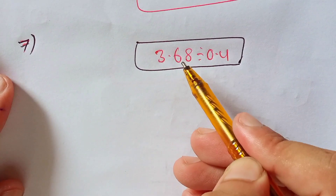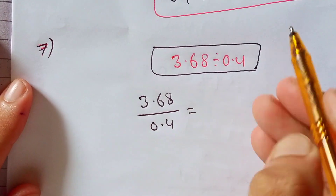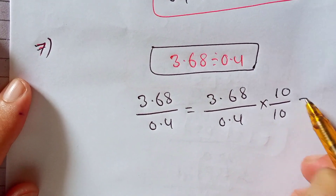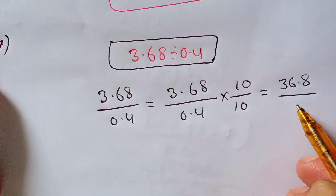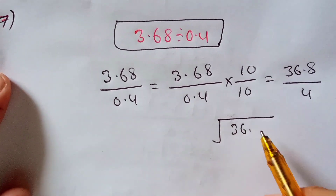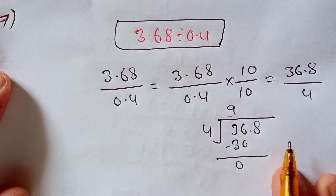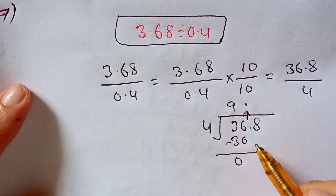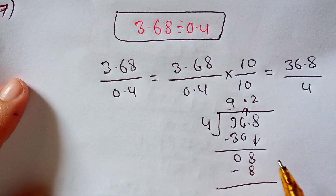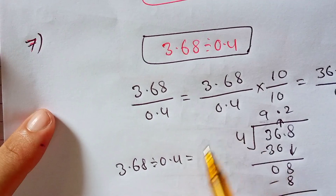In this question we have to divide 3.68 by 0.4. So 3.68 divided by 0.4, multiplied by 10 divided by 10, equals 36.8 divided by 4. How many times does 4 go into 36? 4 times 9 is 36. Subtract 36 from 36, the remainder is 0. Carry the decimal point and bring down the 8. 4 times 2 is 8. Subtract 8 from 8, the remainder is 0. So 3.68 divided by 0.4 equals 9.2.